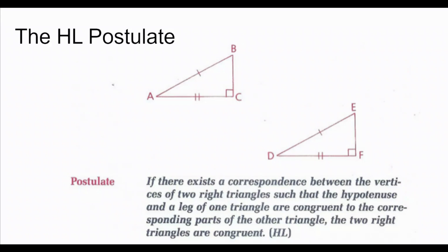I can only use the HL postulate if I have right triangles. I don't need to state that the triangles themselves are right triangles, I just need to show that they contain a right angle, because obviously if a triangle contains a right angle, then they will be right triangles. So when using the HL postulate in a proof, I need to show that the angles are right angles, and then the hypotenuse and a leg of one triangle are congruent to the corresponding parts of the other triangle. Then the two triangles would be congruent by HL.